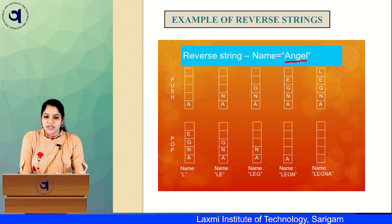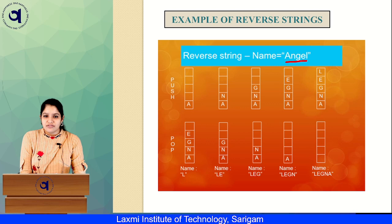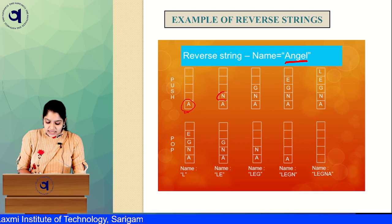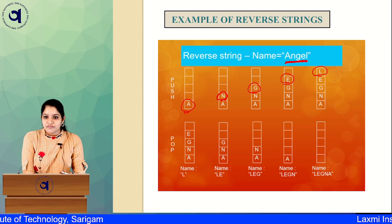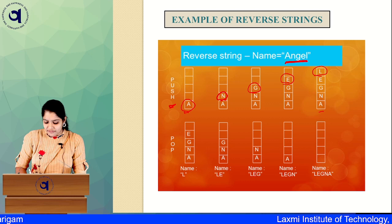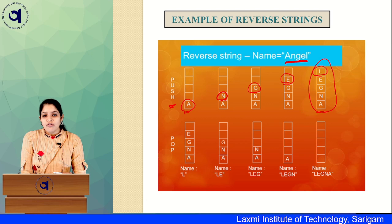Let us take one example. Here we have the name 'angel' and if I want to reverse the entire string, first of all we need to push characters one by one to the stack. So here we are having 'angel', so first we push A, then N, then G, then E, then L. So we have pushed all the characters A, N, G, E, L and at the end of this push operation the entire stack has the string 'angel'.